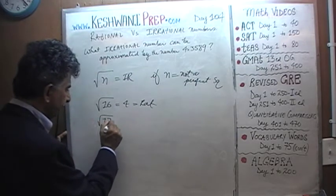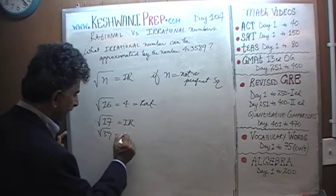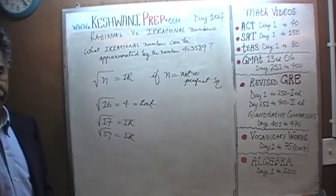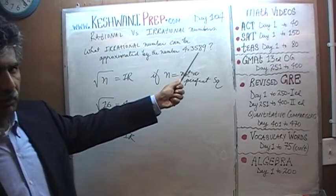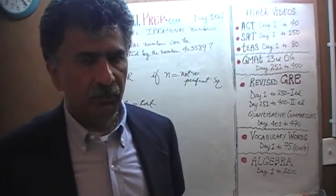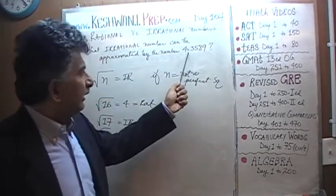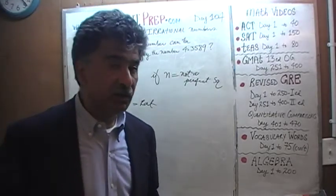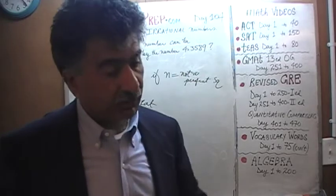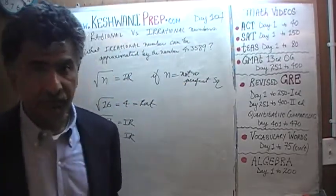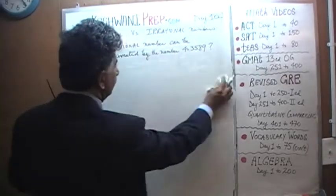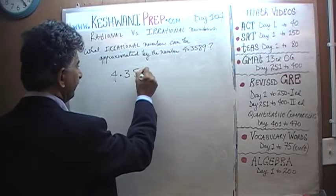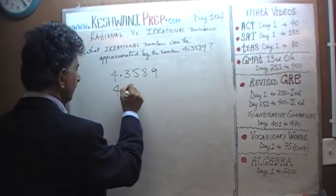But if instead of 16 we had 17, that would be irrational. The square root of 39 is going to be an irrational number. Any number that is not a perfect square — if you take the square root of it, it's going to be irrational. Before we do any work at all, the smart thing to do is ask: what do we get when we multiply this quantity by itself? If that result is very close to an integer, that's what we're looking for. Let's find out. We have 4.3589 times 4.3589.